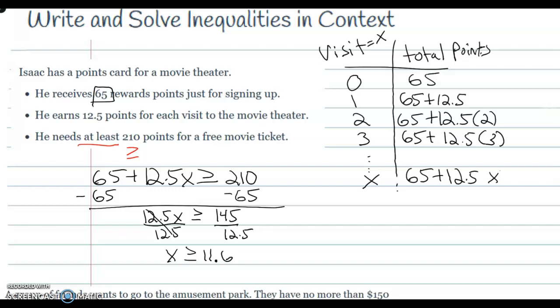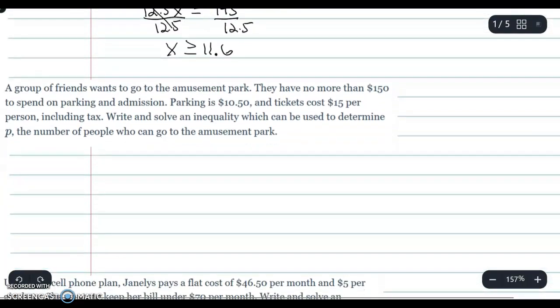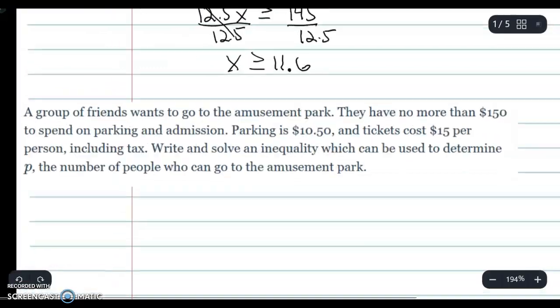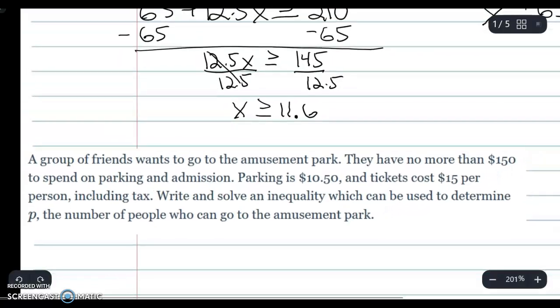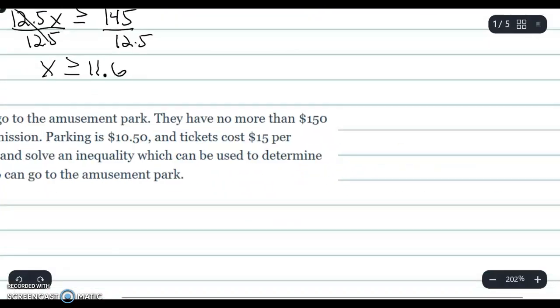Alright, let's take a look at another example and I'm going to set up a table just like I did there. Alright, I'm going to zoom in on this here. A group of friends wants to go to the amusement park. They have no more than $150 to spend on parking and admission. Parking is $10.50 and tickets cost $15 per person including tax. Write and solve the inequality which could be used to determine p, the number of people who can go to the amusement park. I'm going to come over here and set up a table.